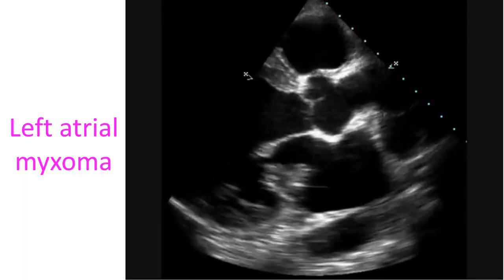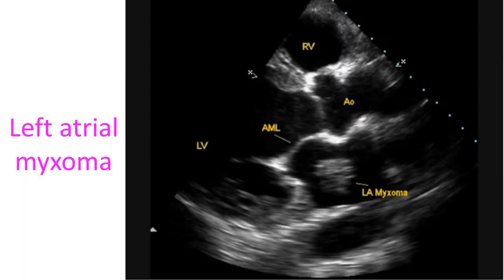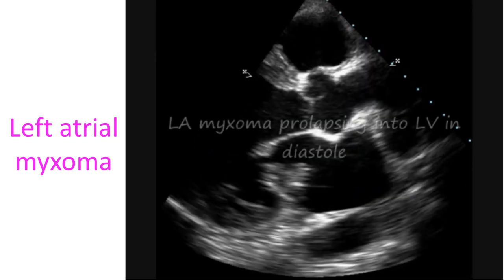Vegetations in general are irregular in shape, mobile, and attached to a wall. But there could be vegetations attached to the myocardium in locations of jet lesions.